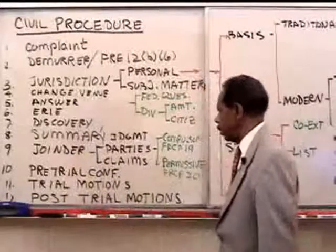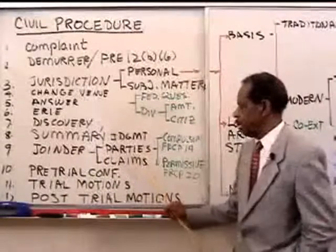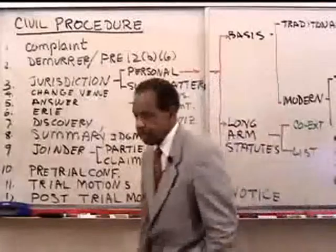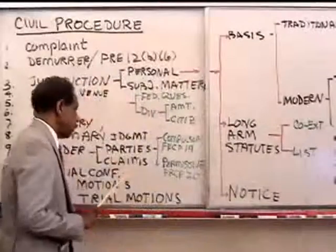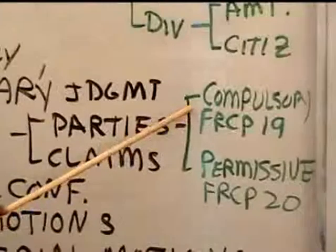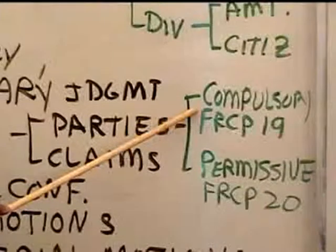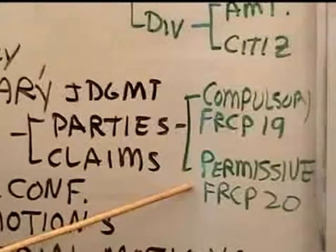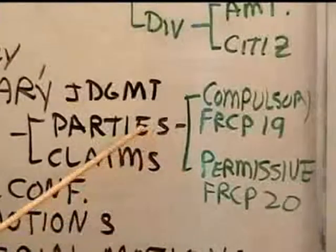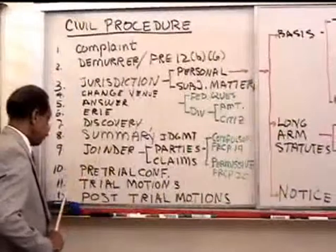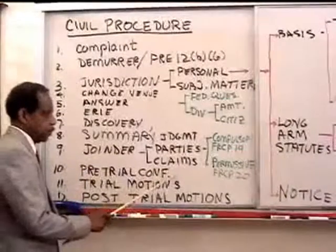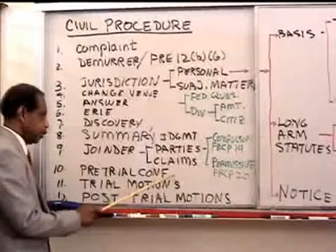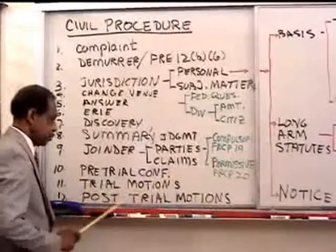Joinder: this is a case where we may want to join additional parties or additional claims in the lawsuit. If we want to join additional parties, those additional parties may be compulsory joinder — meaning we are required to join those people or we'll get dismissed — or permissive joinder where we want to join or they want to join into the lawsuit. Finally comes the pretrial conference where the parties meet and make their final attempt to settle the case.